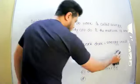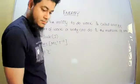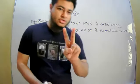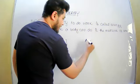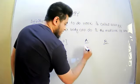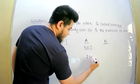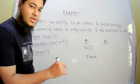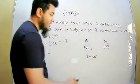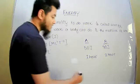Now I want to ask you a question. There are two persons — person A and person B. Person A can do 50 joules of work within one hour. Person B can do the same amount of work — he also does 50 joules of work — but he takes two hours. Now I want to ask you: who has higher energy?